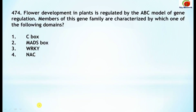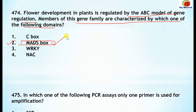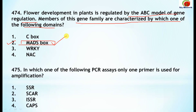Question 474: flower development in plants is regulated by the ABC model of gene regulation. Members of this gene family are characterized by which one of the following domains? The correct option is the MADS-box domain — this is the correct one.